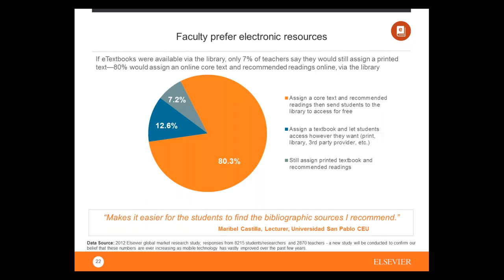We see that faculty now increasingly prefer access to electronic resources. According to a survey, if textbooks were available via the library online, only 7% would still assign printed content, while 80% would assign the online core text and recommended reading. It's also more convenient for teachers and students, as they can find information more quickly and easily through electronic resources.